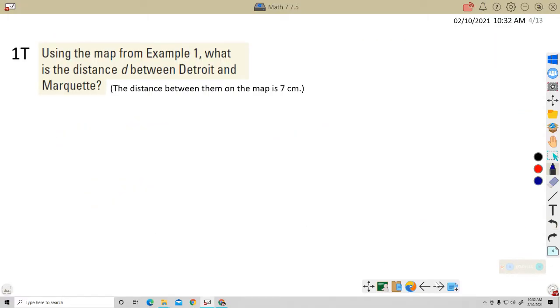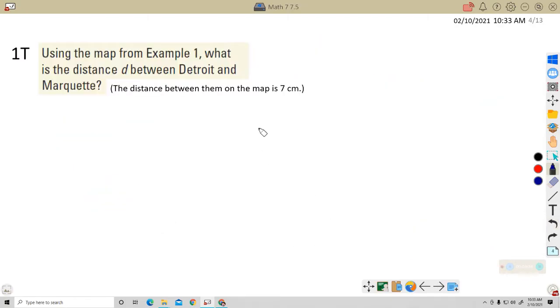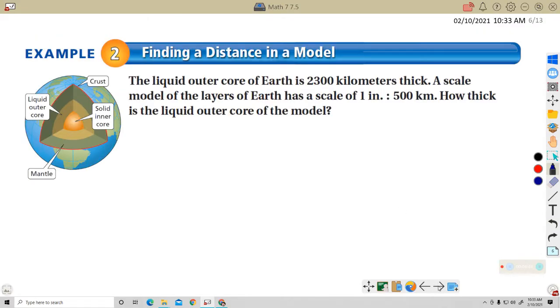Let's take a look here. Try this one. Using the map from example one, the scale again was one. Remember the scale was one centimeter equals 50 miles. Let me write this over here for you before you start. One centimeter equals 50 miles. What's the distance D between Detroit and Marquette? And the distance between them on the map is seven centimeters. Pause the video here. Finish this one out.